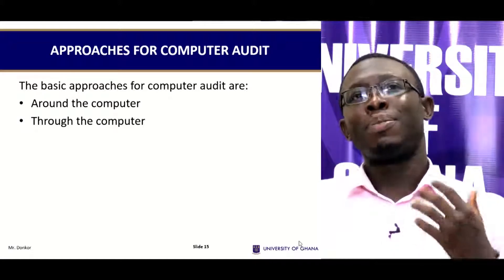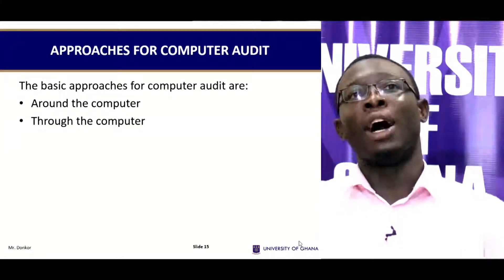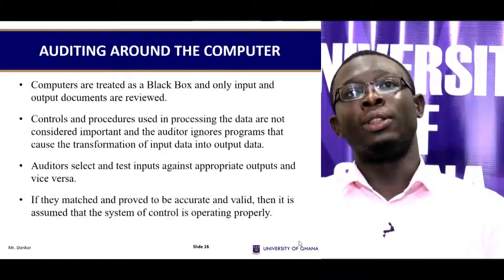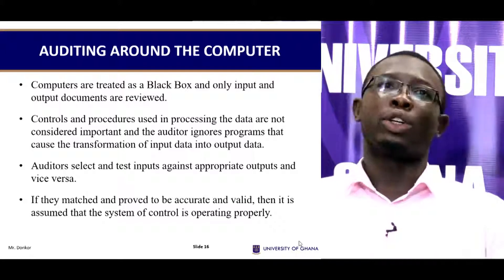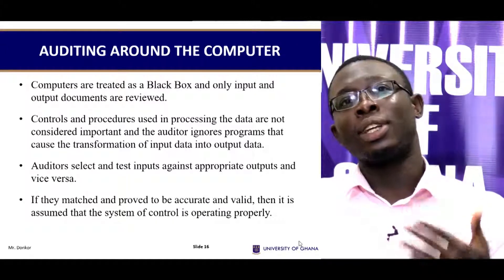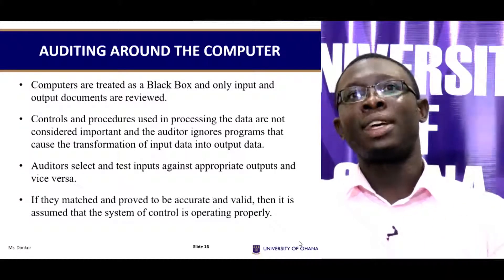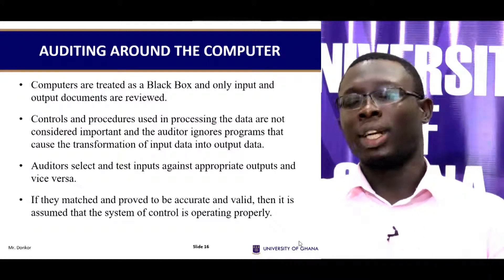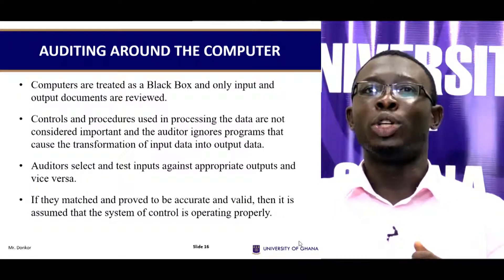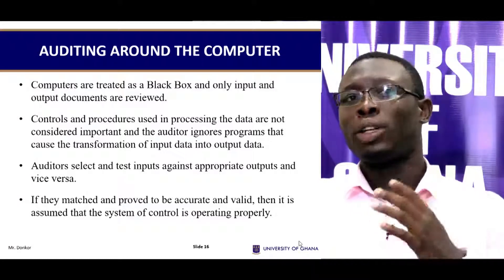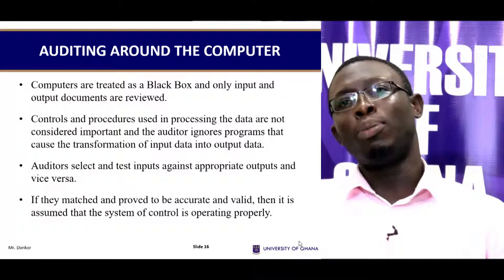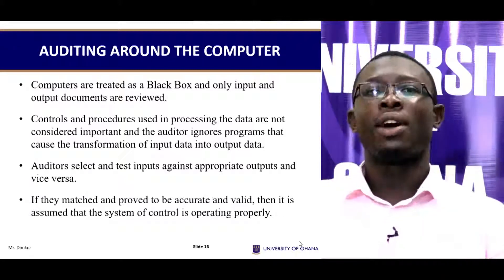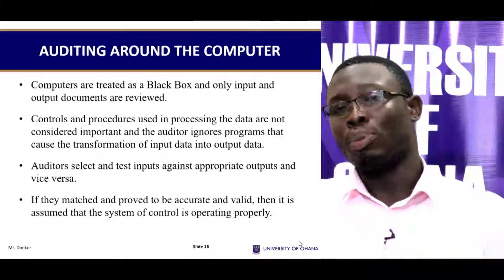The basic approaches for computer audit are auditing around the computer and auditing through the computer. In auditing around the computer, computers are treated as a black box — only input and output documents are reviewed. Controls and procedures used in processing the data are not considered, and the auditor ignores the programmes that transform input data into output. Auditors select and test input against appropriate output and vice versa. If they match and prove to be accurate and valid, it is assumed that the system of control is operating properly.